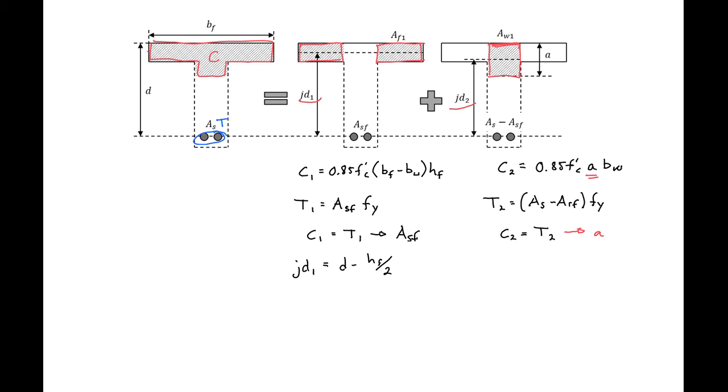In the second case, we'll have a jd sub 2 is equal to d minus a over 2, since our compression block has a depth of a in this instance.